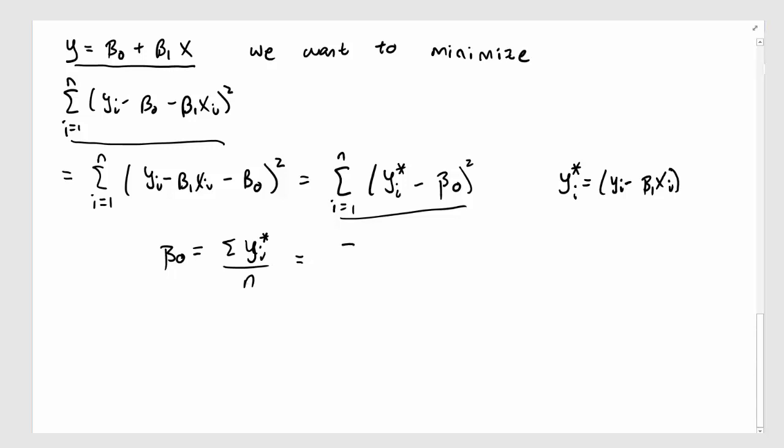Let's plug back in what yi star is. It's summation yi minus beta 1 xi divided by n. If I distribute out that sum, I get y bar minus beta 1 xi bar.